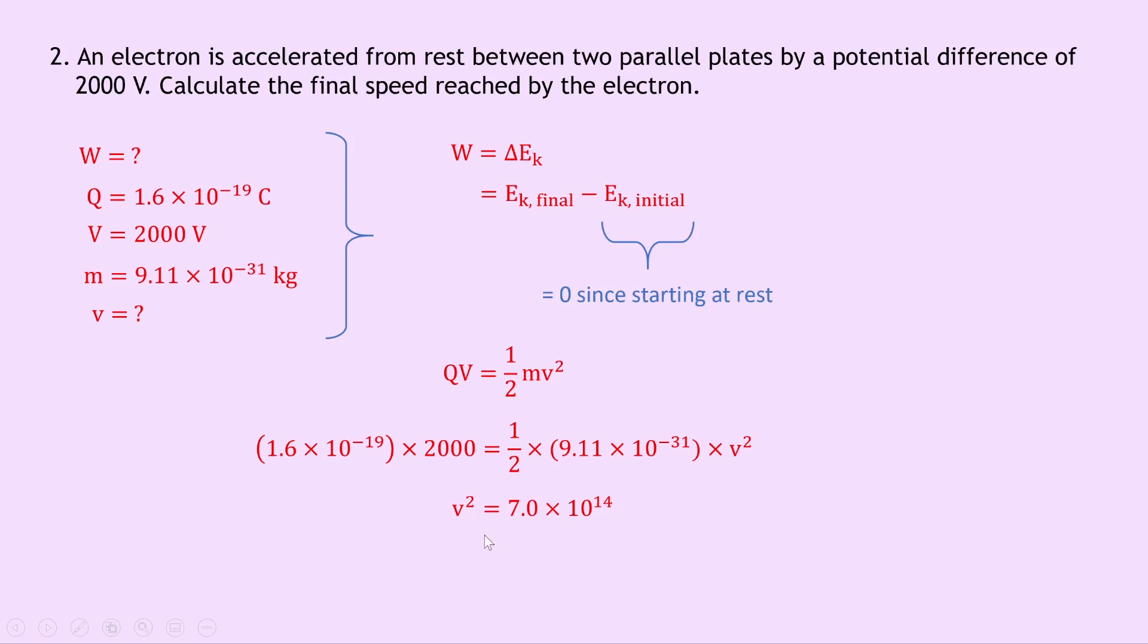And then to get what V is on its own, we need to take the square root of both sides. So we get that V equals 2.65 times 10 to the 7 meters per second.